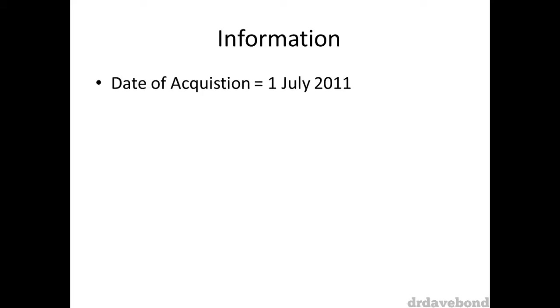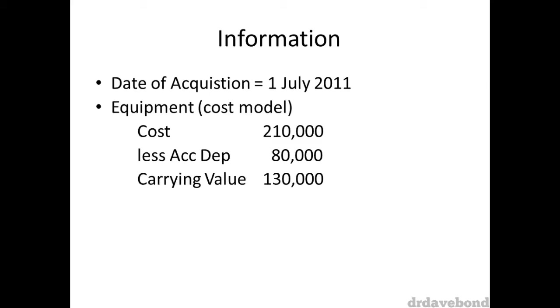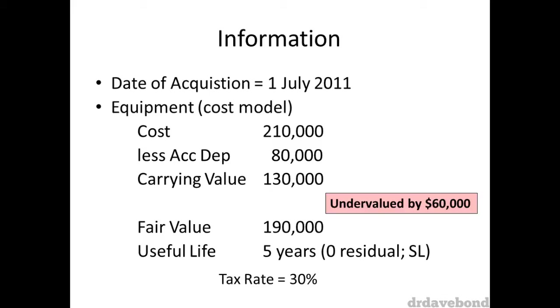Welcome to a short video on accounting for the fair value adjustment of depreciable property, plant and equipment and subsequent effects that need to be considered. The date of acquisition is the 1st of July 2011. The equipment in the subsidiary has been accounted for using the cost model. Its cost is $210,000, accumulated depreciation is $80,000, leaving a carrying value of $130,000. The fair value provided is $190,000, which means the asset is undervalued by $60,000. The remaining useful life is 5 years, with a zero residual, depreciated using the straight line method. The company tax rate is 30%.